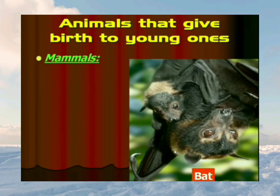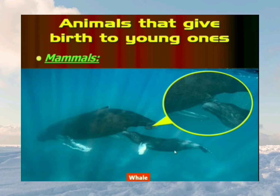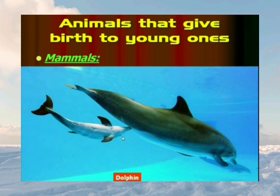Even dolphins and whales, although they look like fish and live in water, are not fish. Dolphins and whales are aquatic mammals — they give birth to young ones and feed them on milk. As you can see in the pictures, a whale is feeding its young one and a dolphin is feeding milk to its young one. So dolphins and whales are also mammals.